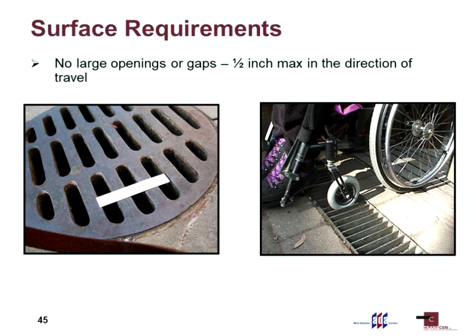Another surface requirement is no large openings or gaps — one half inch in the direction of travel is the maximum. Wheelchair casters are sometimes very small and narrow and can slip down into cracks in a drainage grate, making it difficult to get out. Utility grates may be placed correctly during construction but put back incorrectly after storm sewer flushing, so look for pedestrian-friendly grates. Expansion joints can often be filled, and tree grates can sometimes be a problem. The maximum is half an inch in the direction of travel.